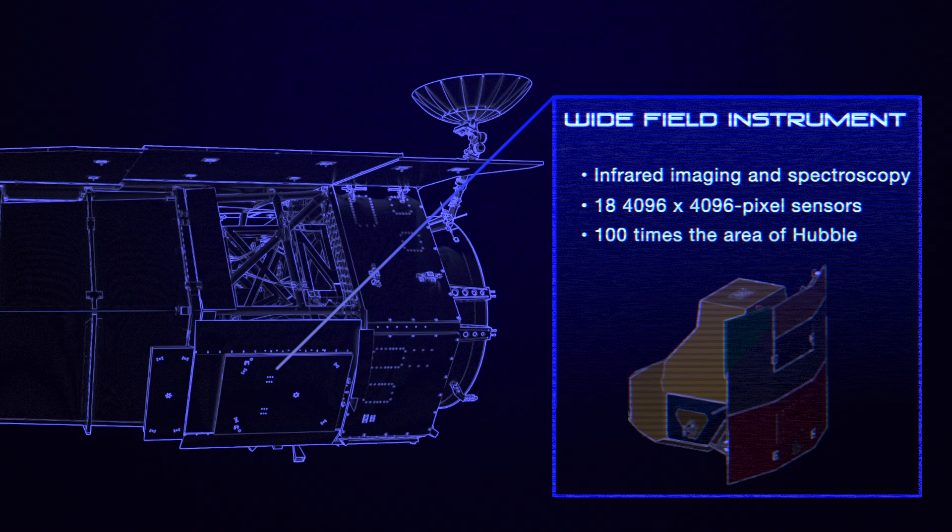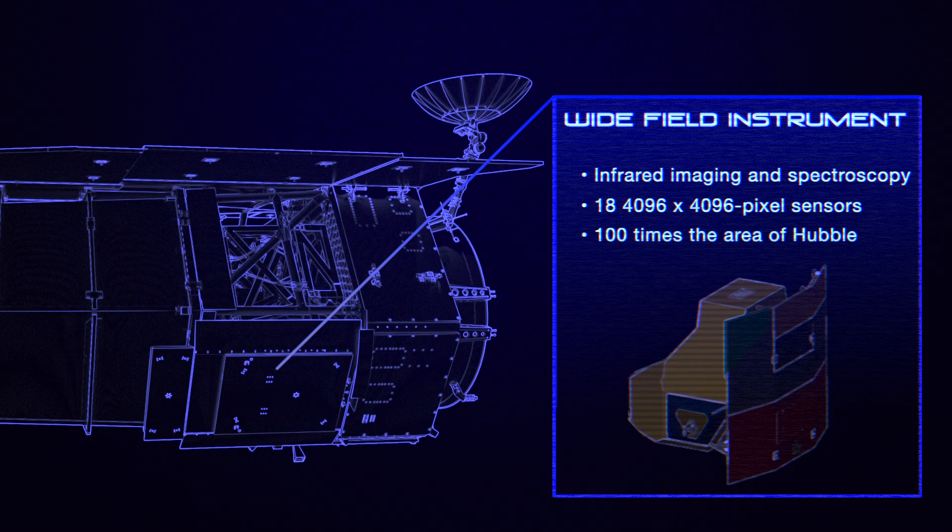Roman's main camera is the wide-field instrument, which will take infrared pictures of the sky to study dark energy, observe galaxies and stars, and find exoplanets.